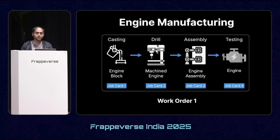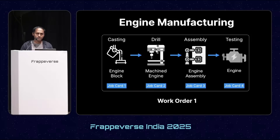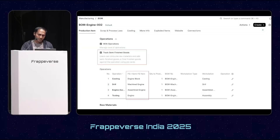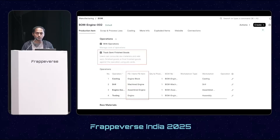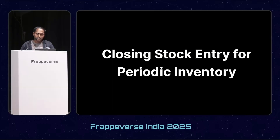There was also no linking between them, so maintaining a sequence was hard. To fix this, in version 16 we have added a feature where the user will be able to make a stock entry of a manufacturing job card. You don't need to create multiple work orders — just a single work order handles this use case. To enable this feature, you have to configure it at the BOM level by enabling the 'track semi-finished goods' checkbox and mapping the semi-finished or finished good against the operation.